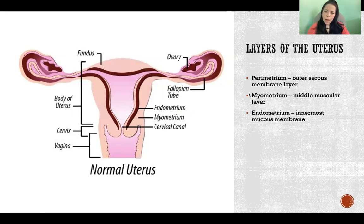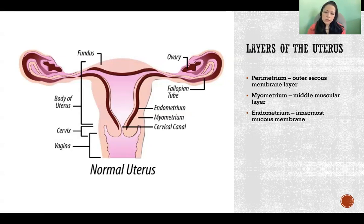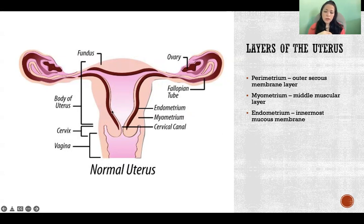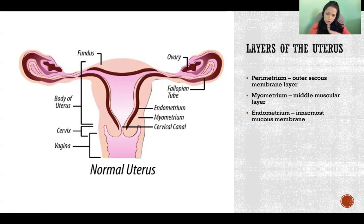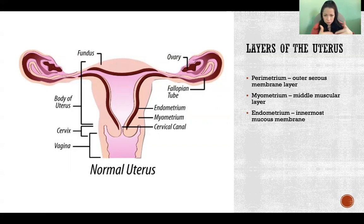The myometrium — 'myo' as in muscle — is the middle layer made of heavy, thick muscle. Then the endometrium — 'endo' as in inside — is the innermost layer, and that is a mucus membrane. Mucus membranes line the organs and tracts that are exposed to the outside environment. Because the vagina is open to the outside environment and opens into the uterus, the inside of the uterus is also exposed to the outside, so that whole tract is lined with mucus membrane.